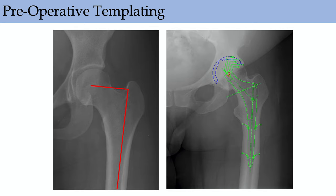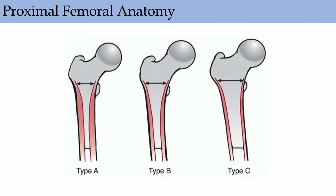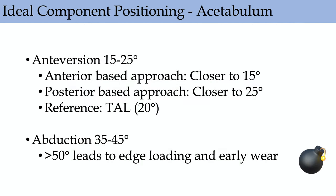For proximal femoral anatomy, the Dorr classification: A is the champagne flute, B is the standard femur, and C is a very capacious canal typical for cemented total hip arthroplasties. For ideal component positioning, there's really no safe zone anymore. Originally described by Lewinnek as about 40 degrees of abduction plus or minus 10 and 15 degrees of anteversion plus or minus 10. For anterior-based approaches, anteversion is closer to 15 degrees.